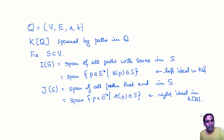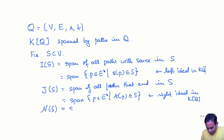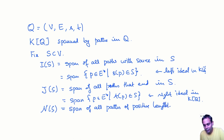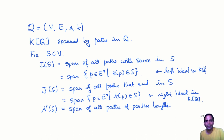For an example of a two-sided ideal in KQ, define N(S) to be the span of all paths of positive length — all paths of length greater than 0. Remember, the path algebra includes paths of length 0, one for each vertex of the quiver. The span of paths of positive length forms a two-sided ideal. You should try to prove these three assertions about left ideals, right ideals, and two-sided ideals in the path algebra of a quiver.